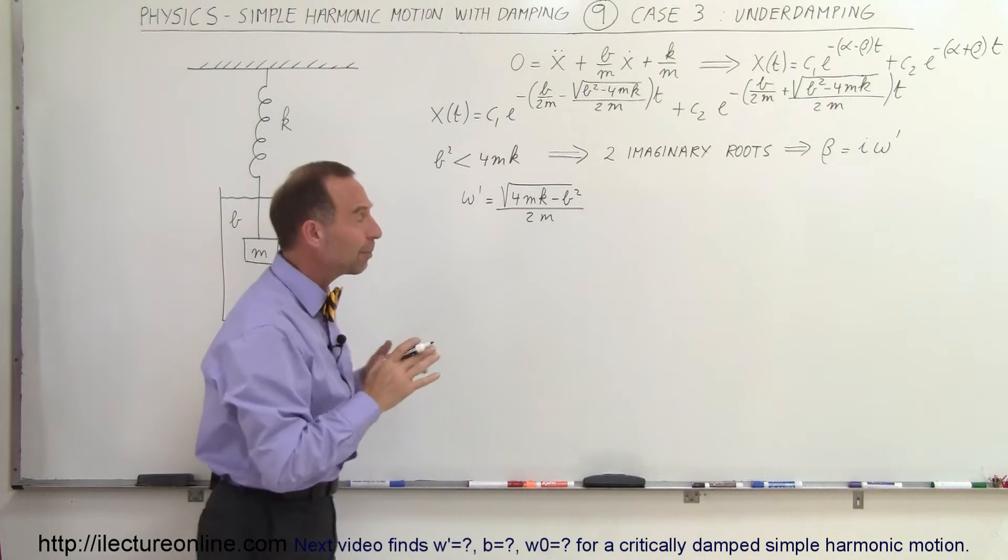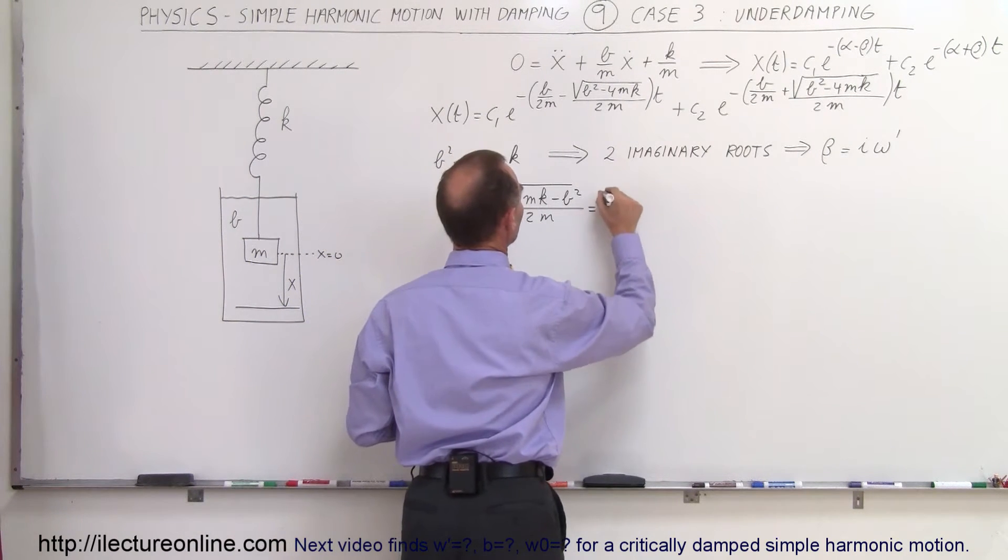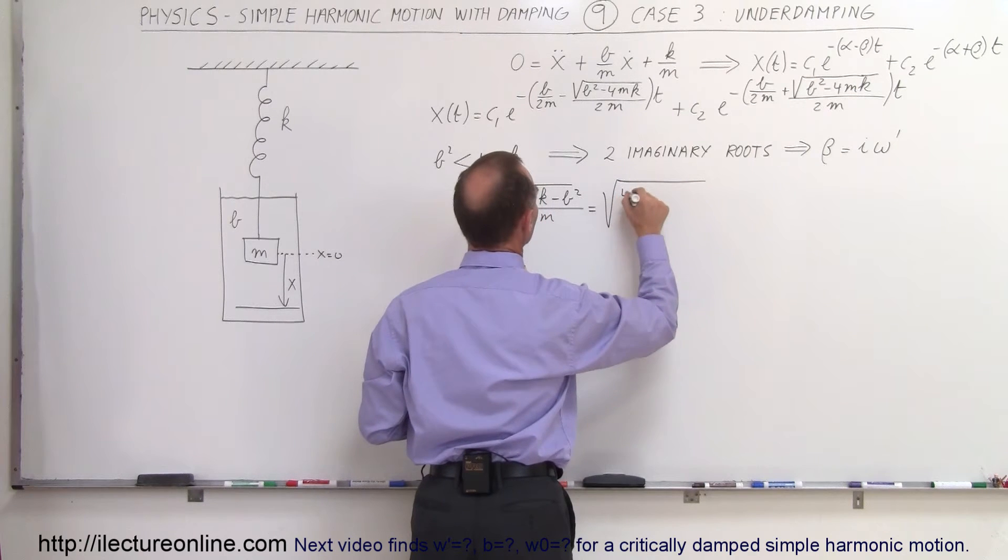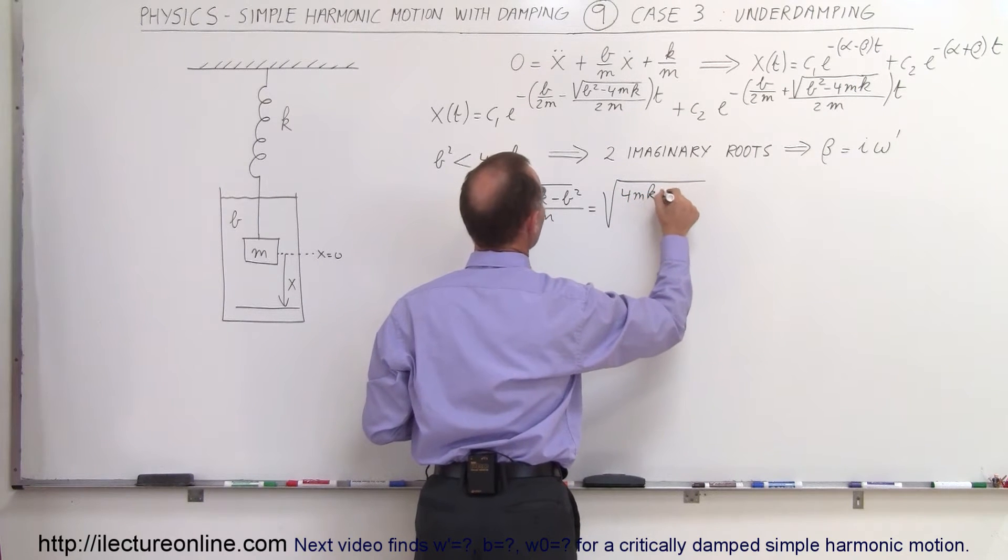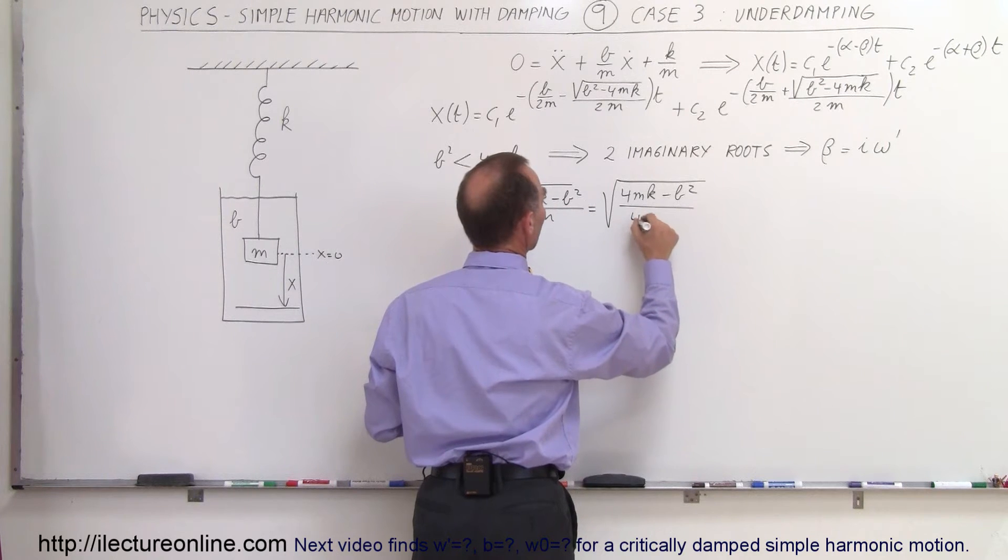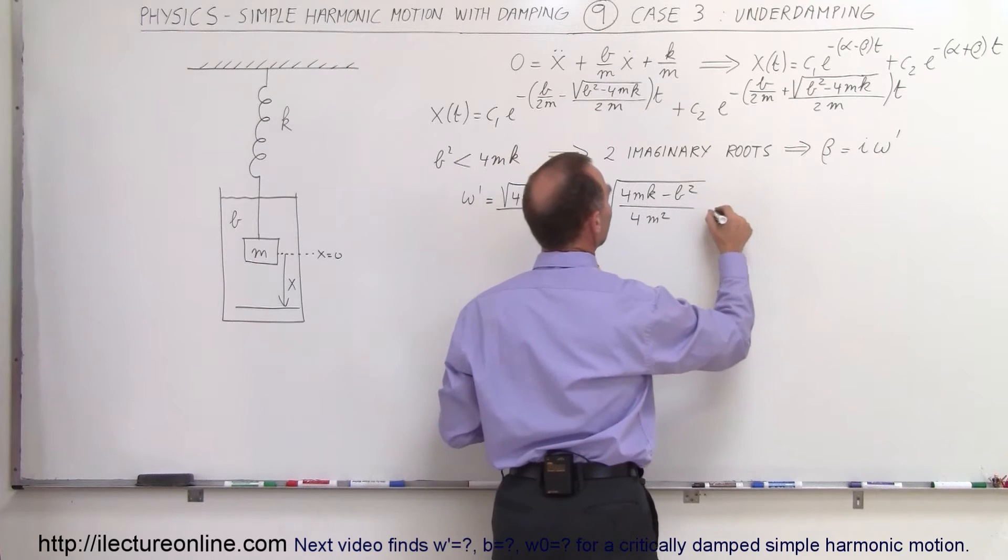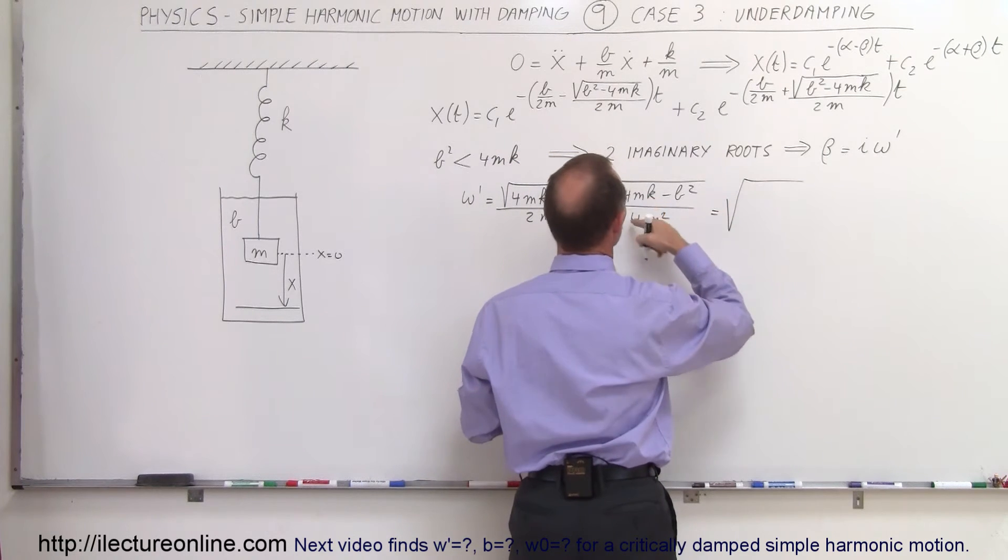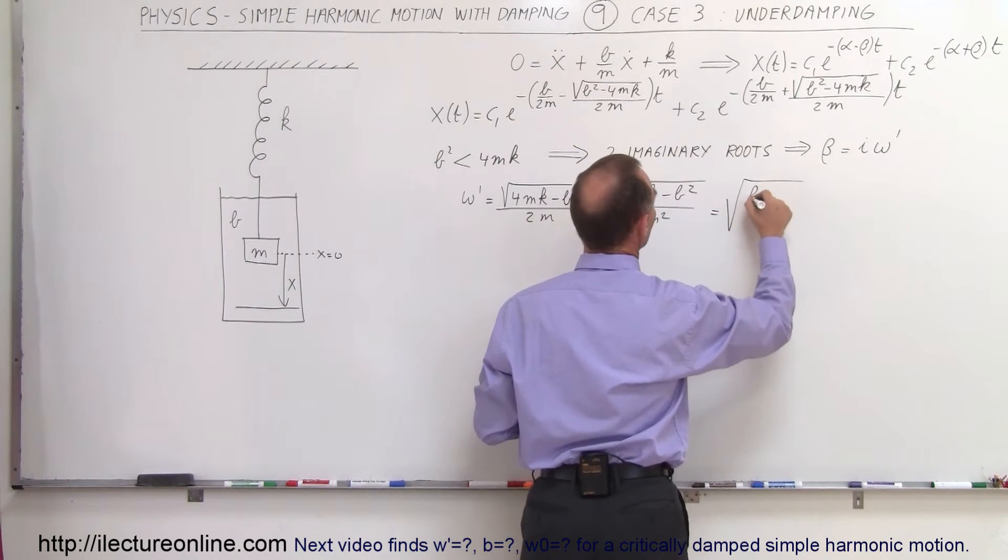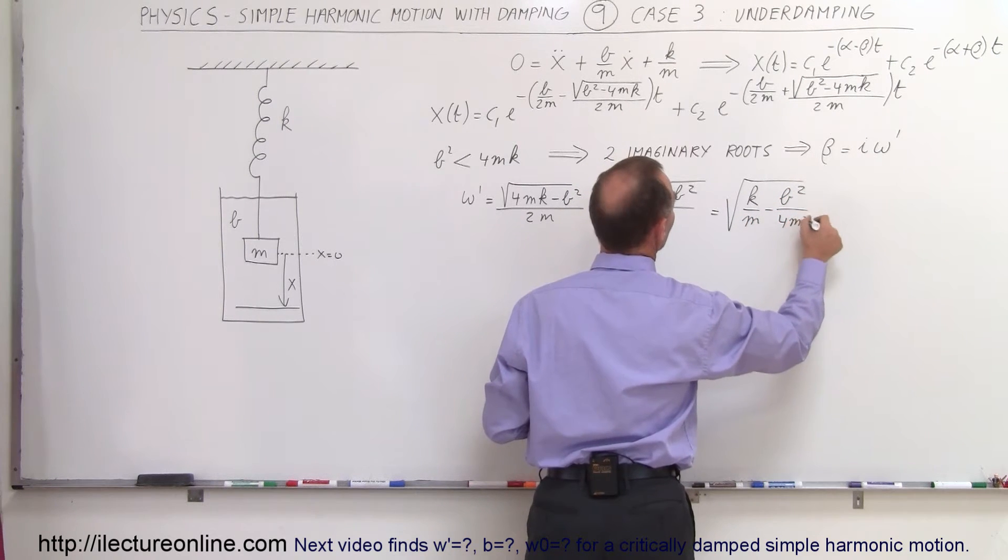And I'm going to now go ahead and simplify that a little bit more. I'm going to put the 2m inside the radical, so this is equal to the square root of 4mk minus B squared, divided by, when I put it in the radical, would be 4m squared. And if I now divide that into the numerator, I get equal to the square root of k over m minus B squared over 4m squared.